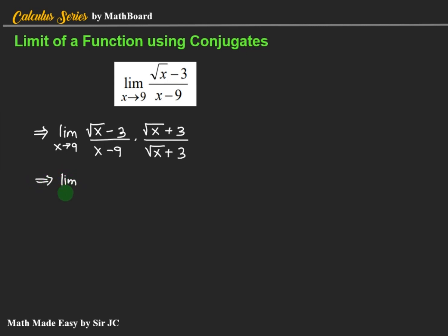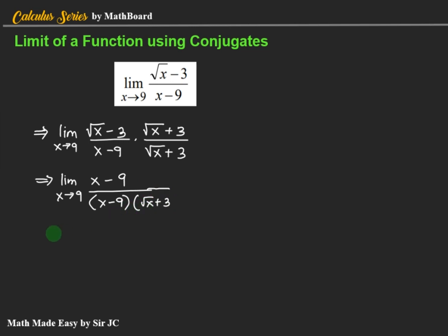So we simplify. √x times √x is x, and negative 3 times positive 3 is negative 9. The denominator becomes (x − 9)(√x + 3). As you can see, we can now cancel (x − 9).